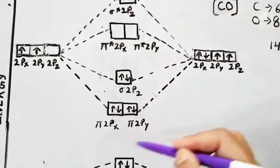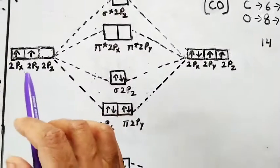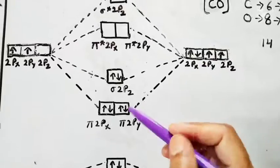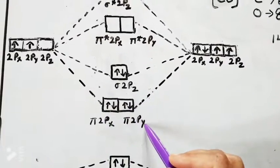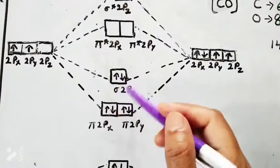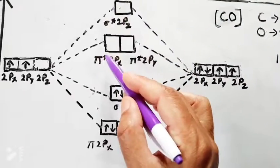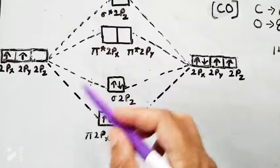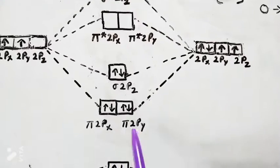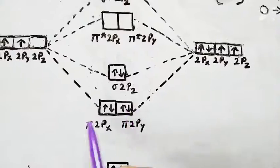Now the 2p orbitals of the carbon atom and the 2p orbitals of the oxygen atom will combine with each other and form molecular orbitals. There are two electrons in carbon's 2p atomic orbital and four electrons in oxygen's 2p atomic orbital, giving six electrons total. So two will be in the pi 2px orbital, two will be in the pi 2py orbital, and two will be in the sigma 2pz orbital. Since no extra electrons remain, the anti-bonding orbitals will stay empty. One important thing to remember is that these two molecular orbitals — pi 2px and pi 2py — have nearly the same energy, so electrons are filled one by one.